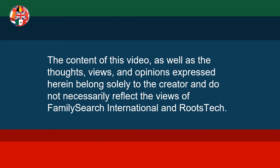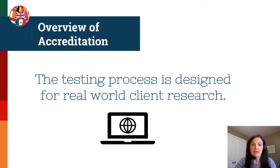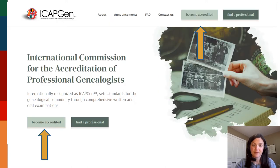For the purpose of this class today we will be taking an overview of the process for accrediting. ICAPGen has designed the accreditation process to improve and test your skills for the real world of client research. The information we talk about today is also available on the ICAPGen website, icapgen.org. Look for the section that says 'Become Accredited,' located at both the top and the bottom of the web page.